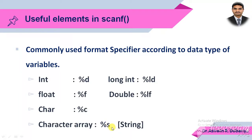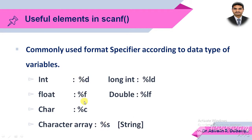For integer data type the format specifier is %d. For float data type it is %f. For character it is %c. These are three basic data types. For long integer the format specifier is %ld. For double you can use %f or %lf. For a character array, or string, the format specifier is %s. All these format specifiers are generally used in scanf according to the variable data type.